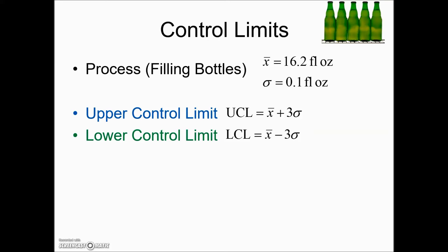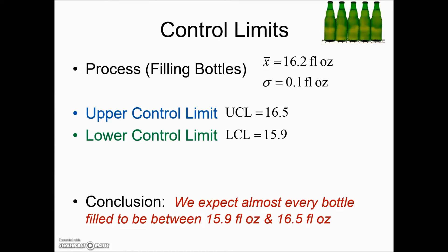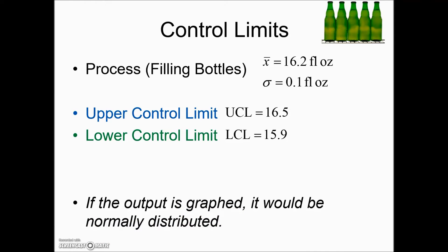These two limits combine to give us that 99.7%. And if we plug in the particular values and continue simplifying, we find an upper control limit of 16.5 and a lower control limit of 15.9. We would expect 99.7 or virtually every bottle to be filled between 15.9 and 16.5 ounces. If the output is graphed, it would look like that bell-shaped curve or a normal distribution.